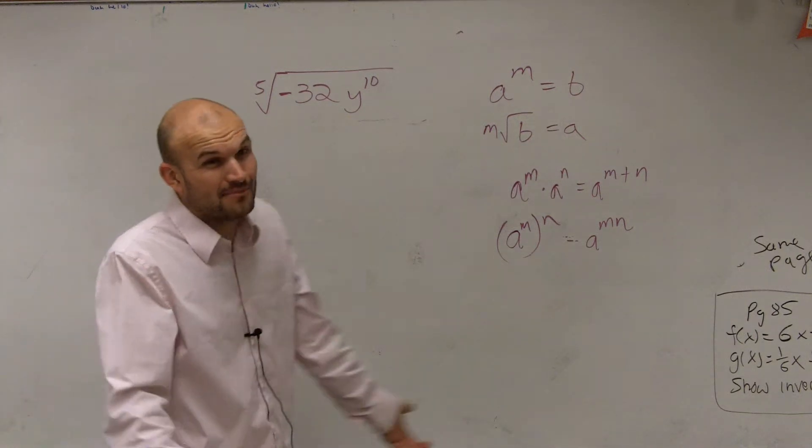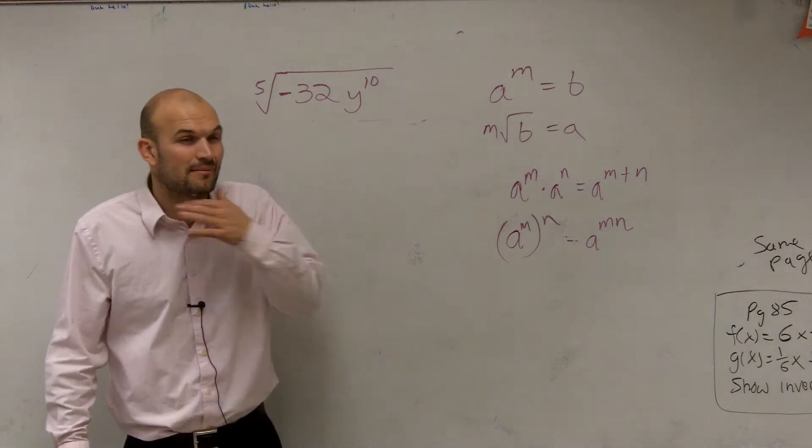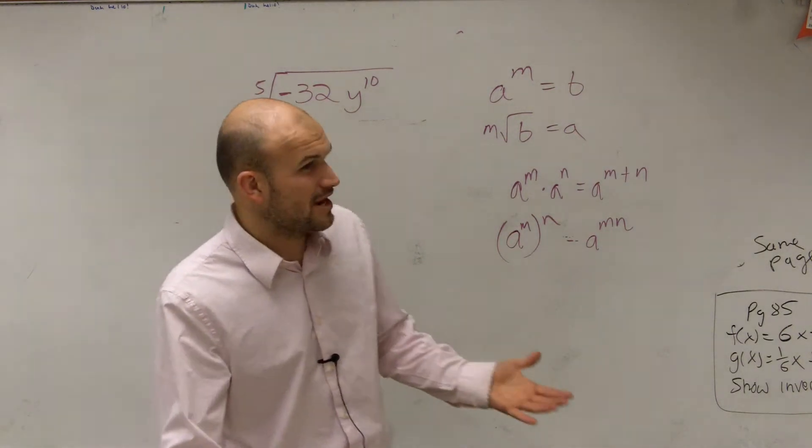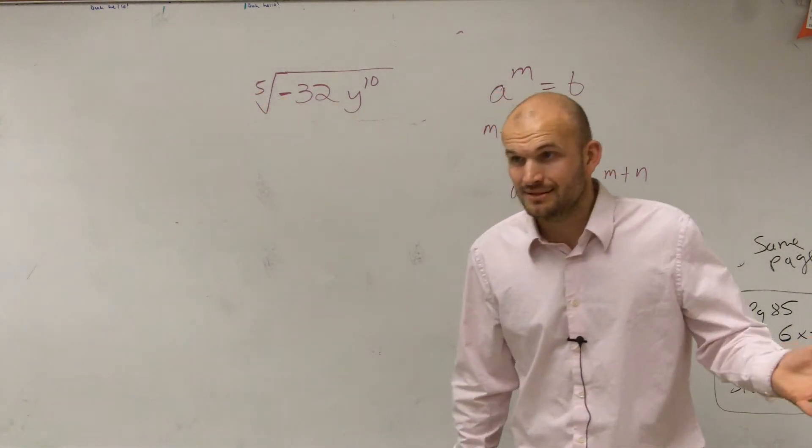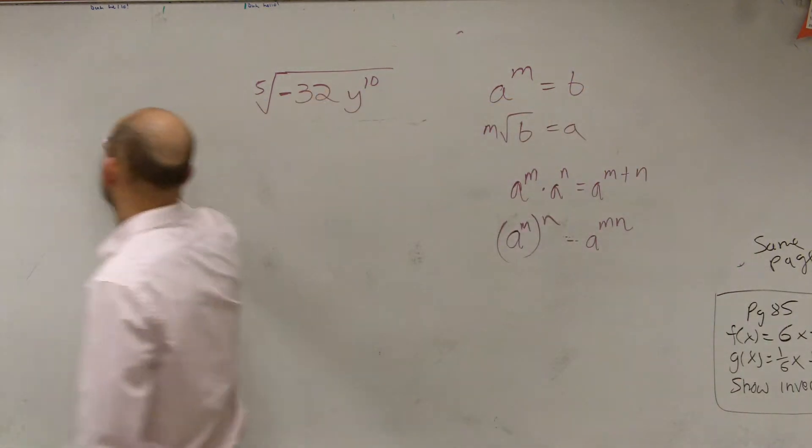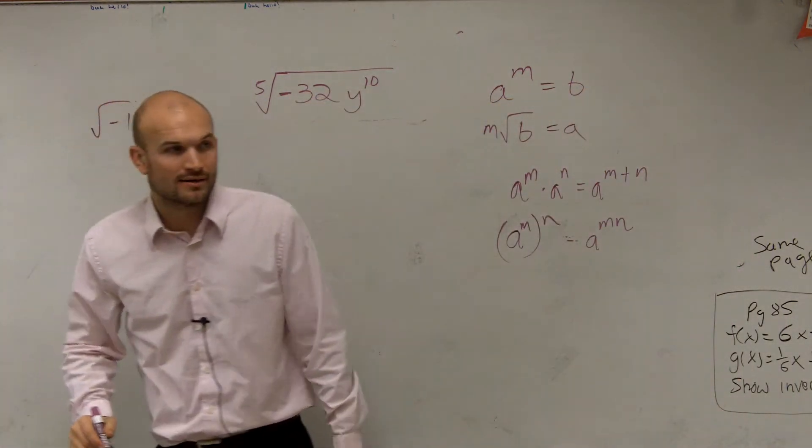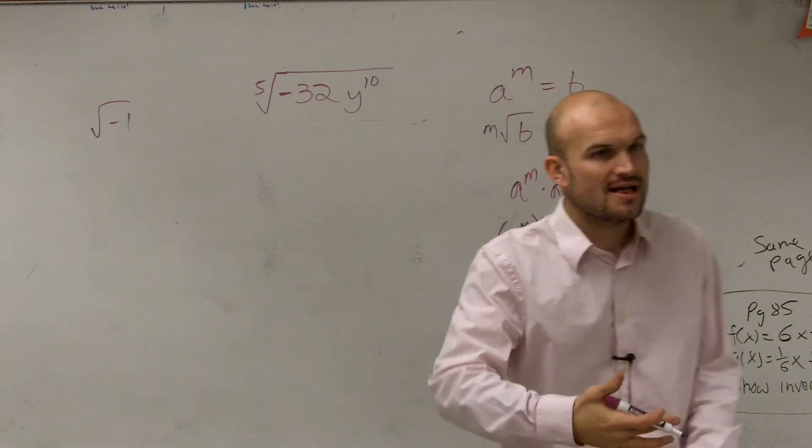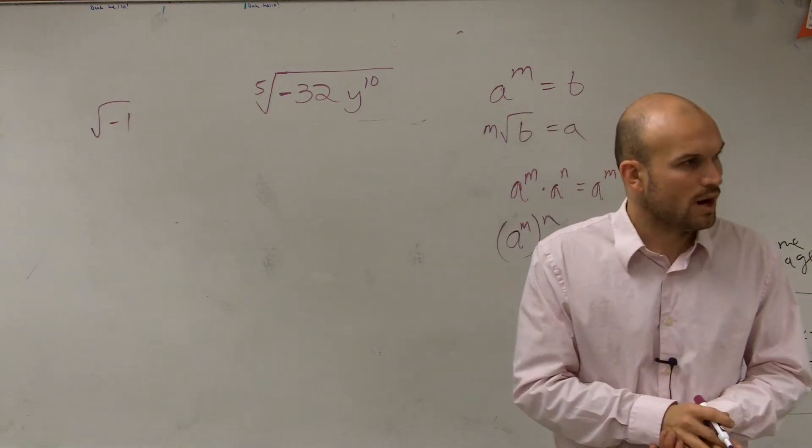So now I need to make this negative. Now I'm looking at this and I'm saying, all right, a negative number. Mr. McGilligan, you always said negative numbers, right? That's going to be i, right? You can't take the square root of negative 1 because there's no two numbers that multiply to give you a negative 1, right?